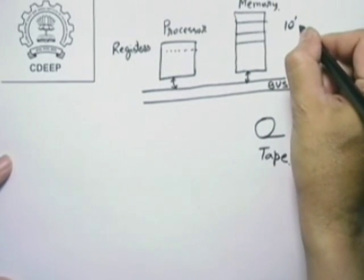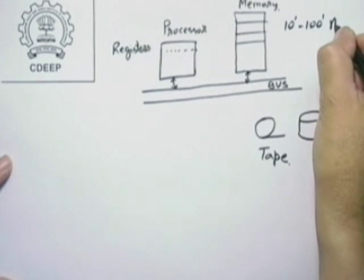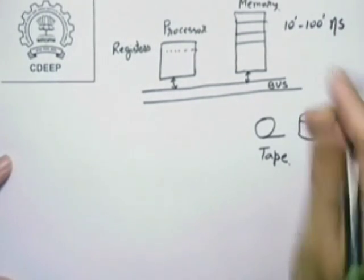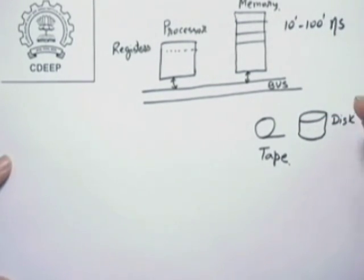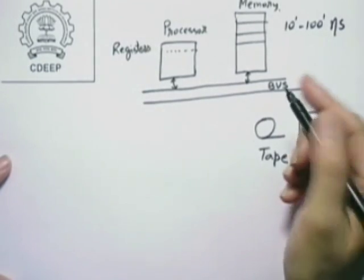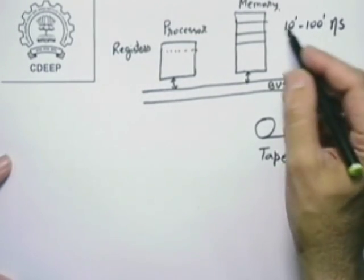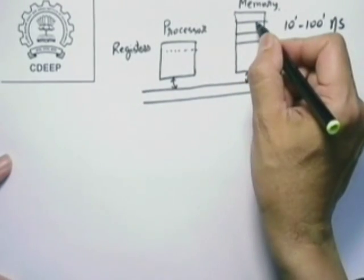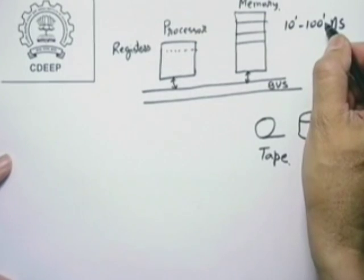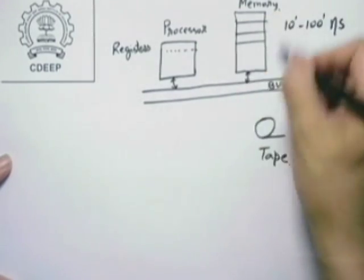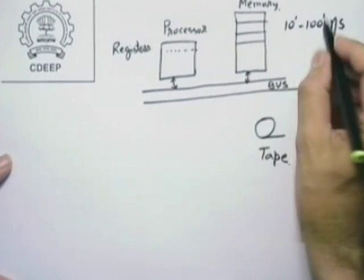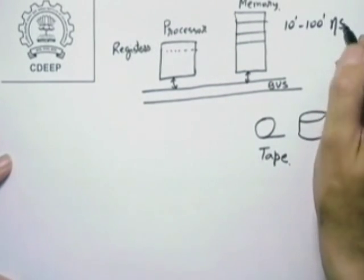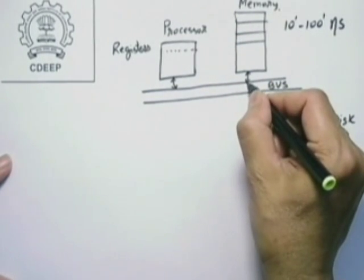Nanosecond is one billionth of a second—second, microsecond, nanosecond, these are extremely small units. If from just outside the memory you want to access a memory location, it will take this much time; if you want to write, it will also take this much time. But the time required for moving data from memory all the way to the processor and back is non-trivial. The registers, on the other hand, and the processor's calculation ability, have been becoming faster and faster.